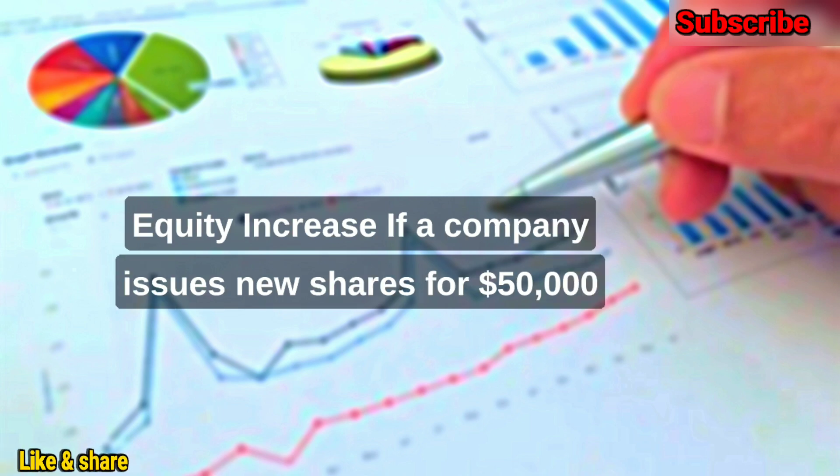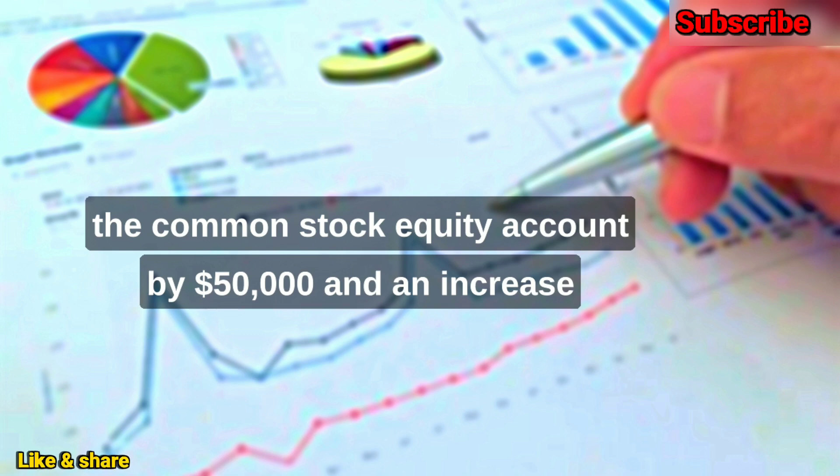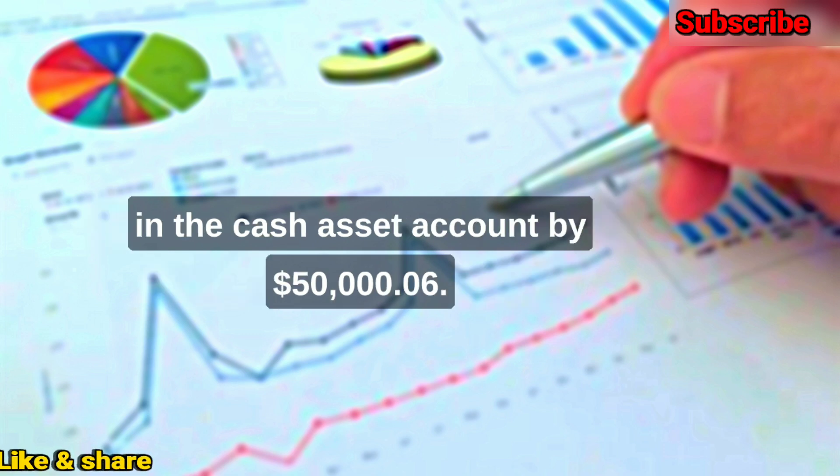Equity Increase: If a company issues new shares for $50,000 in cash, the balance sheet will show an increase in the common stock equity account by $50,000 and an increase in the cash asset account by $50,000.